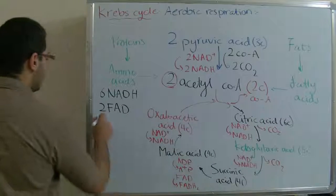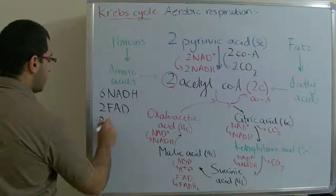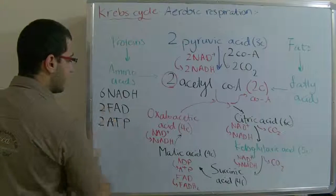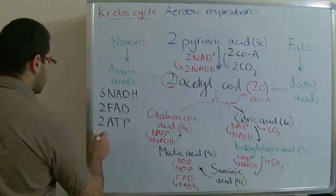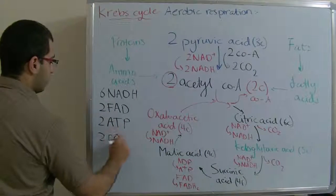ATP we have also two ATP molecules, and here we have two carbon dioxide molecules produced. This is the Krebs cycle.